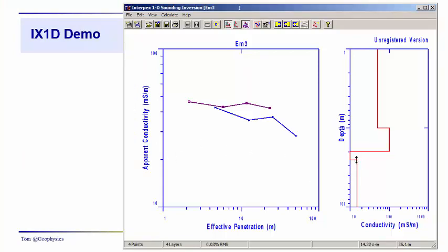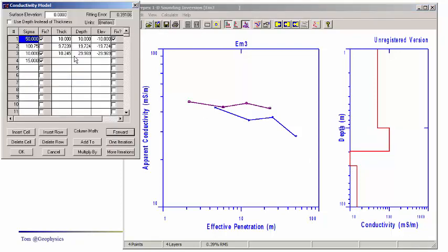We do know a couple things. In order to honor the geology, we need to bring the base of the aquifer down to 30 meters. We could easily come over here and put that in exactly. So we have 30 meters in there.